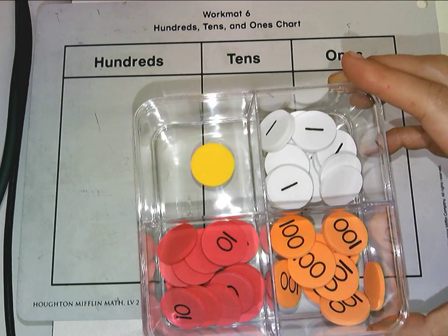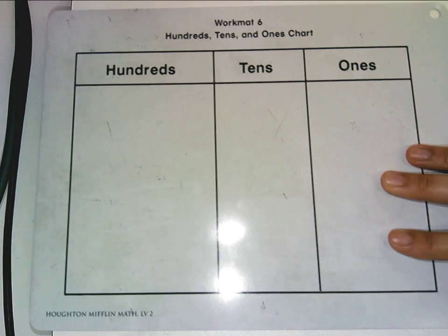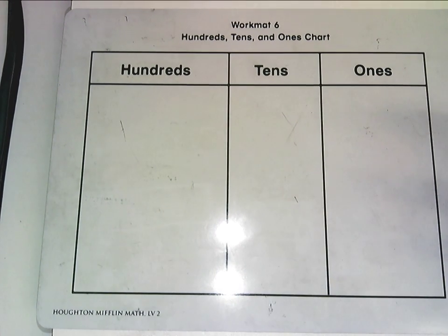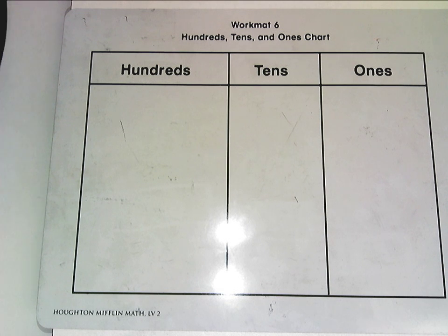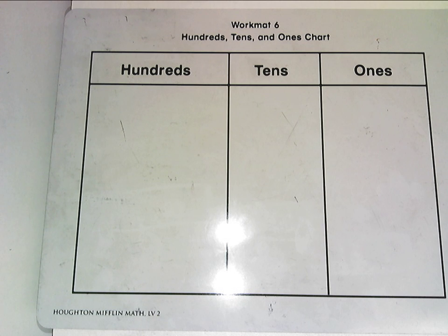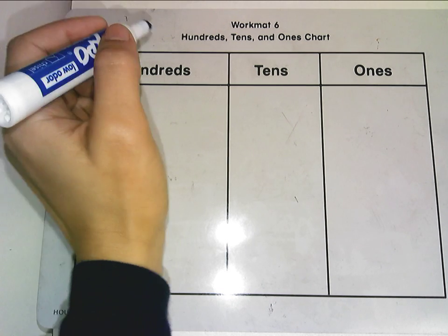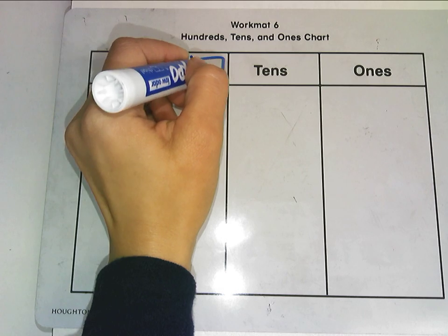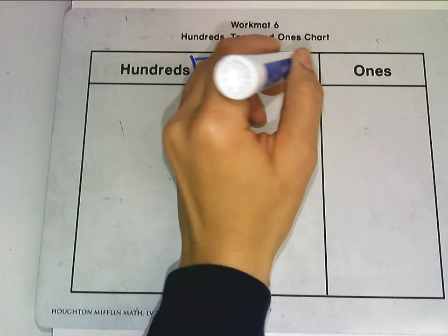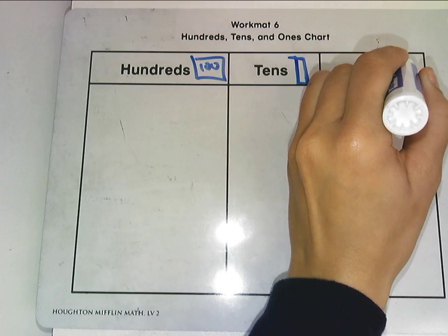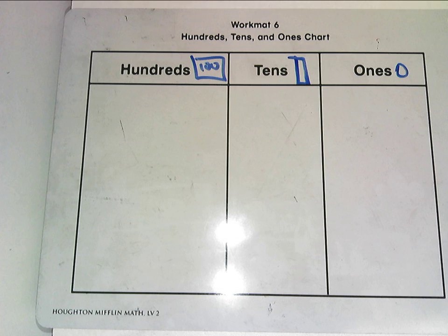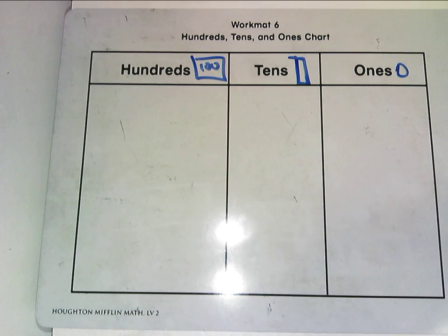Here are some place value disks, and you're going to be using your work mat. You know how to count the value of a three-digit number, but before we were using a quick sketch for blocks. For 100's, you were drawing a box; for 10's, you would draw a stick; and for 1's, you would draw a circle. Now, instead of using those quick sketches, you're going to be using place value disks.